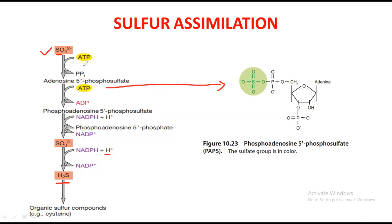This chemical reaction is known as assimilatory sulfate reduction. When something present in the atmosphere in oxidized form is converted into reduced form — if it is sulfate, it is called assimilatory sulfate reduction. Similarly, if NO3 is present in the atmosphere, it is converted through different reactions into NH3 and then used — that is called assimilatory nitrate reduction. Keep these terms in mind as they may be asked in exams.